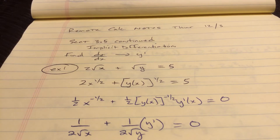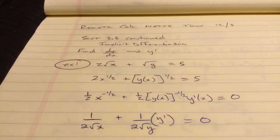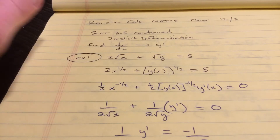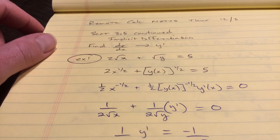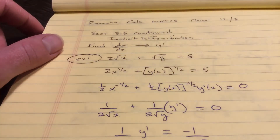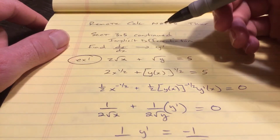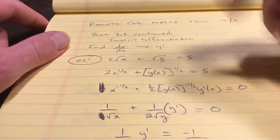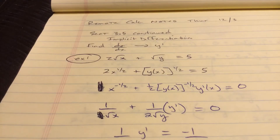Find dy/dx, which is y prime. I am eventually going to stop writing this as y of x towards the end of this video — we don't need to write y of x anymore. So you have 2 times root x plus root y equals 5. That is 2 times x to the 1/2. I'm going to rewrite this as y of x to the 1/2 equals 5. I made a boo-boo: 1/2 times 2 is just 1, so that is just x to the negative 1/2, which is 1 over root x.